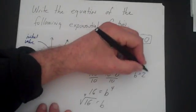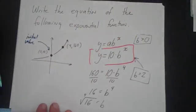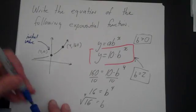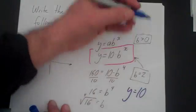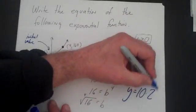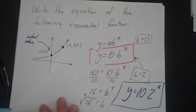So if b is 2, then I simply plug that in. Here I had everything I needed except for b, now I know b, so y is equal to 10 times 2 to the x and that's my final answer. And that's how you write equations of exponential functions.